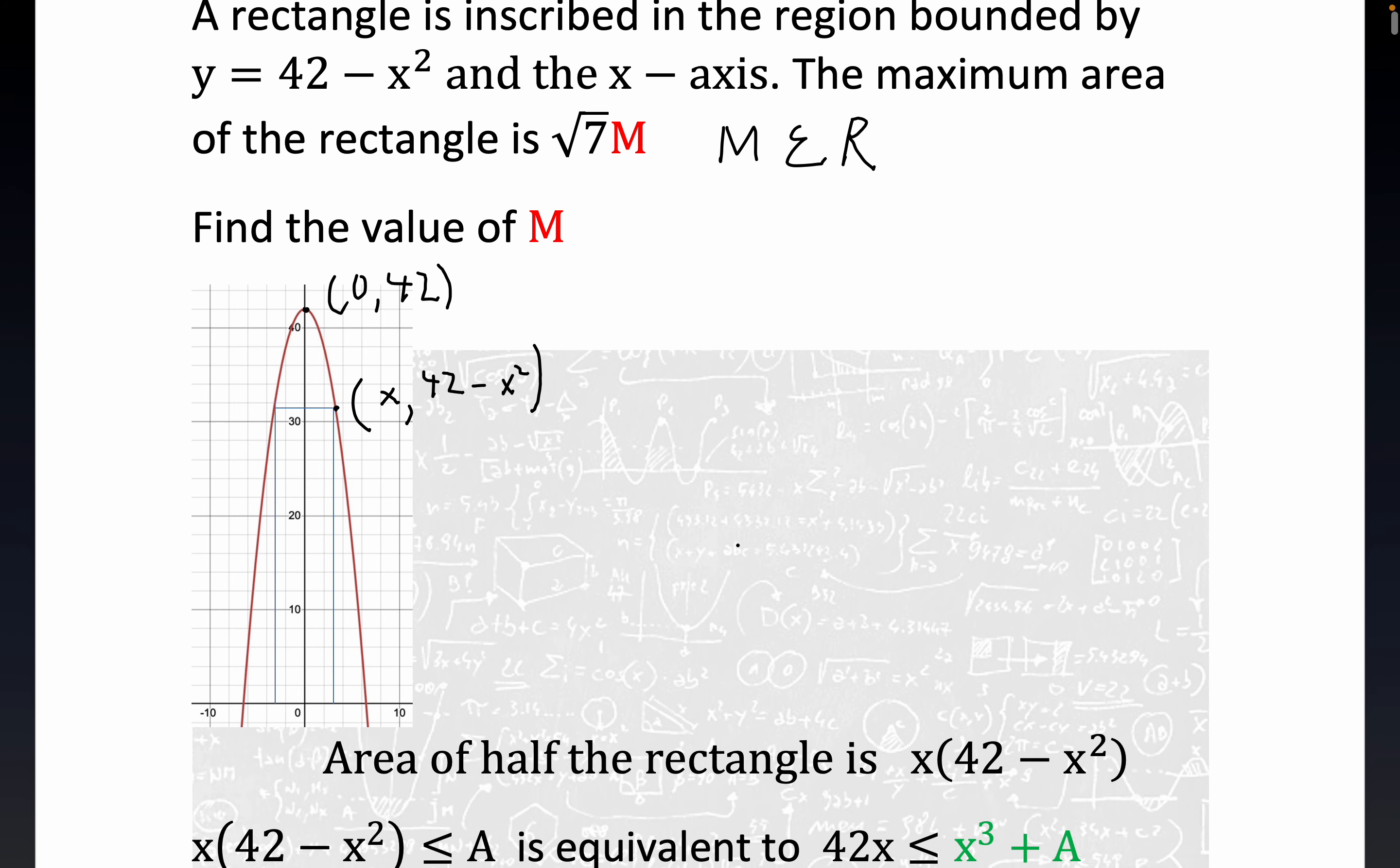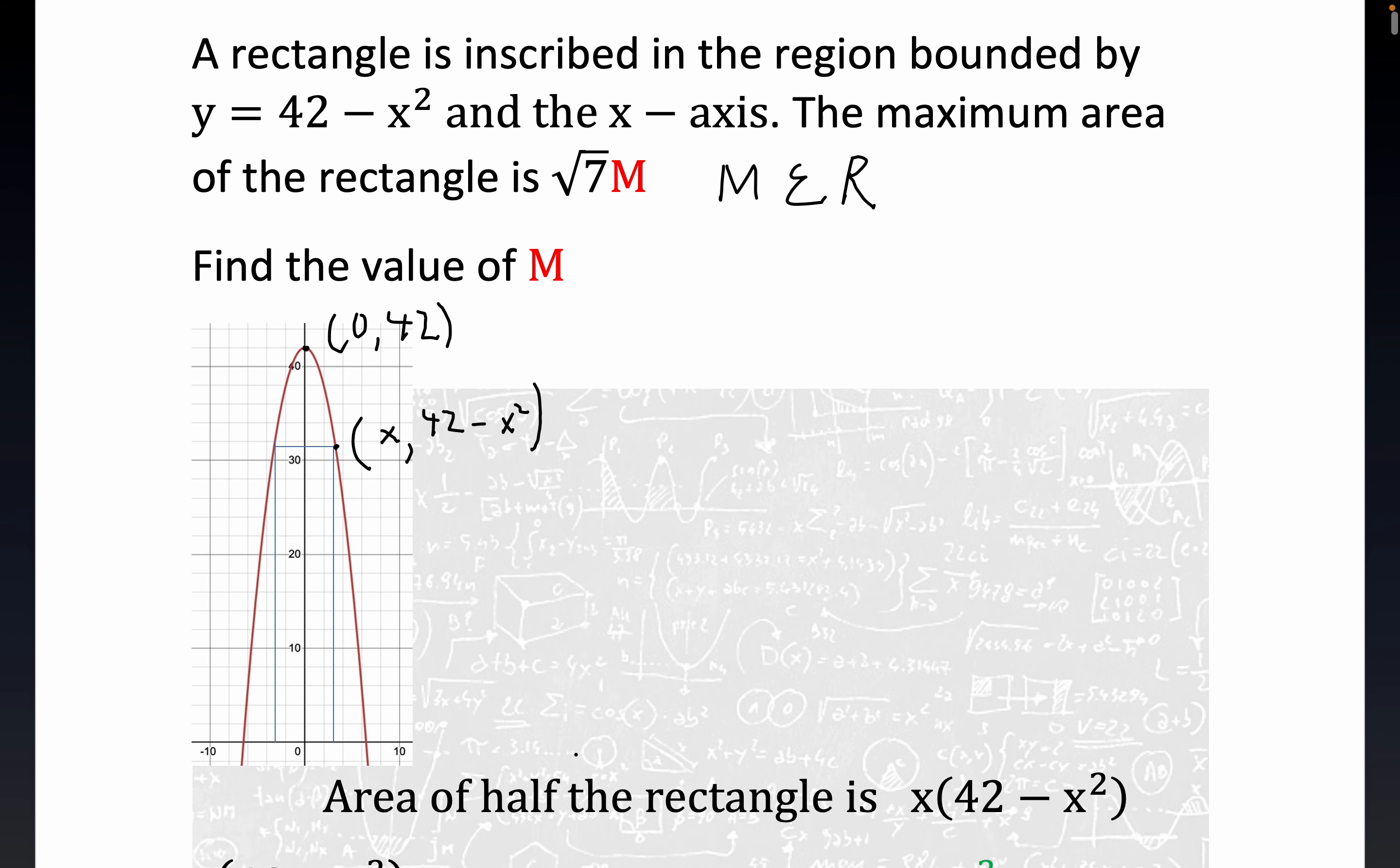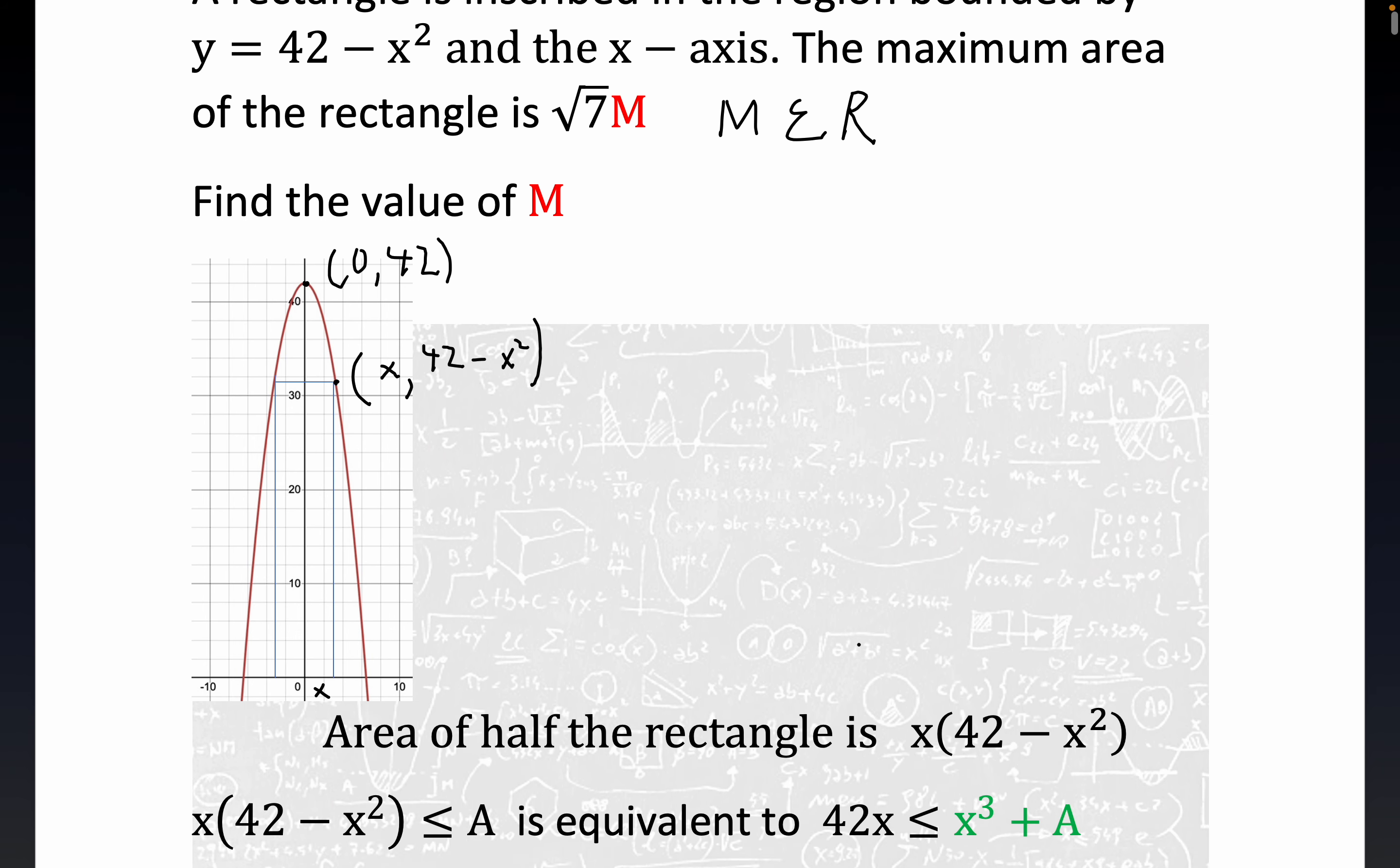And I've done most of the work already. But again, as we noted, the area of half of the rectangle is right here. In other words, this distance right here would be x, which is the width. And of course, the height is just the functional expression. And so half of the area, this would be 2x if we were doing the entire rectangle. So half is just x times this expression.